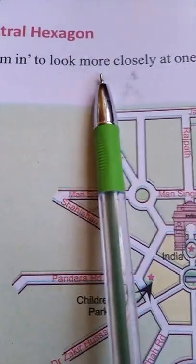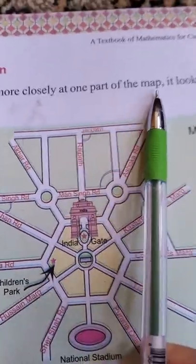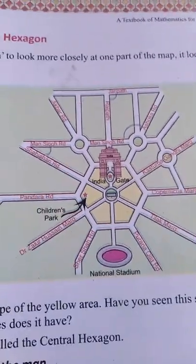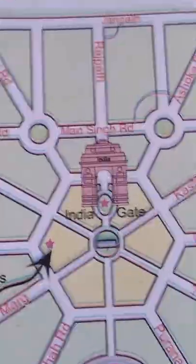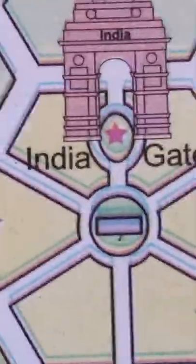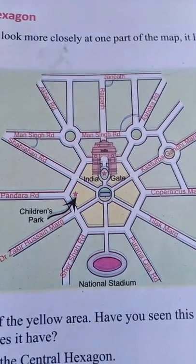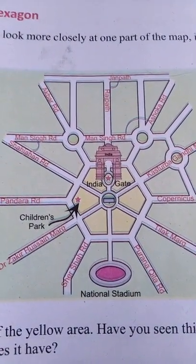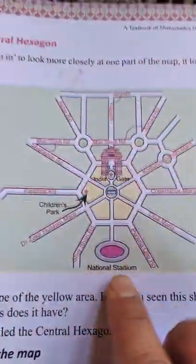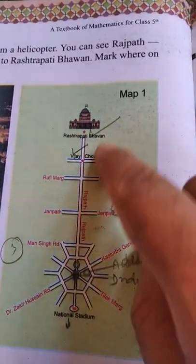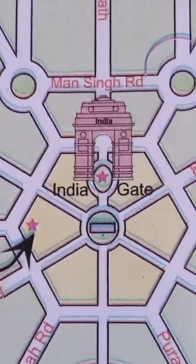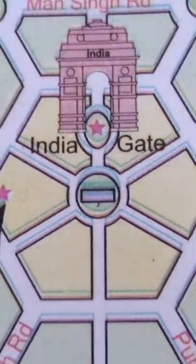If we zoom in to look more closely at one part of the map, it looks like this. If we zoom in to look more closely at one point, we click on the right. The map looks like this — this is the center point of the map. If we zoom in, this part is visible, and we can see this part of the map.